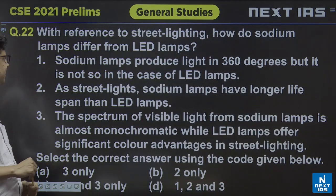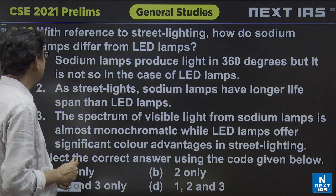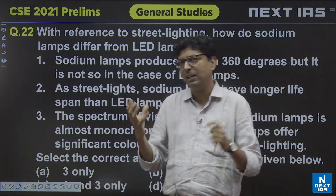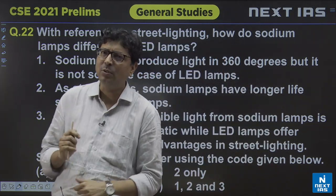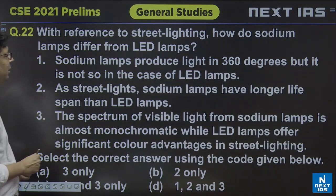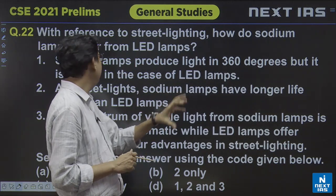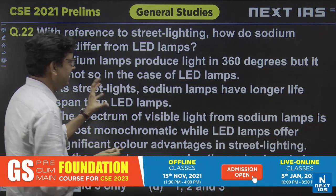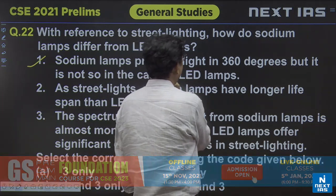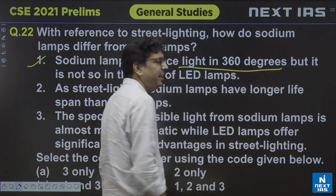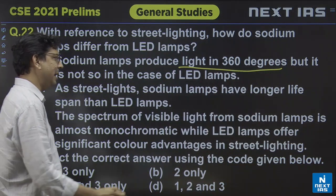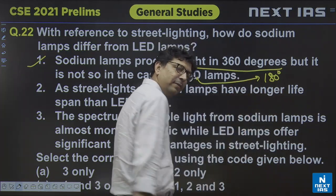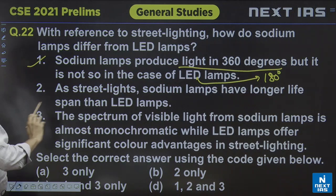Question number 22 in Set C: with reference to street lighting, how do sodium lamps differ from LED lamps? Sodium lamps, like the conventional bulbs, differ from light emitting diodes. First, sodium lamps produce light in 360 degrees, but it is not so in the case of LED lamps. In the case of sodium lamps, the light is produced in 360 degrees, but in case of LED lamps it is around 180 degrees. So this statement is correct.